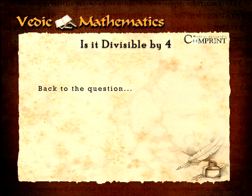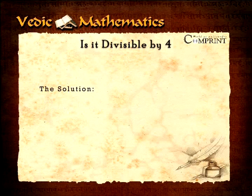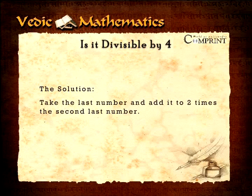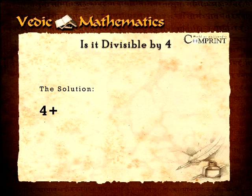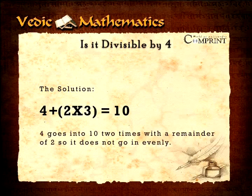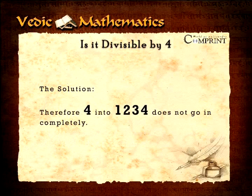For example, four will not go evenly into 1,233 or 1,235. Now, we know that for four to divide evenly into any number, the number has to end with an even number. Let's get back to the question: does four divide into 1,234? The solution is: take the last digit and add it to two times the second-last digit. If four goes evenly into this result, then you know that four will go evenly into the whole number. So, four plus two times three equals ten. Four goes into ten two times with a remainder of two, so it does not go in evenly. Therefore, four into 1,234 does not go in completely.